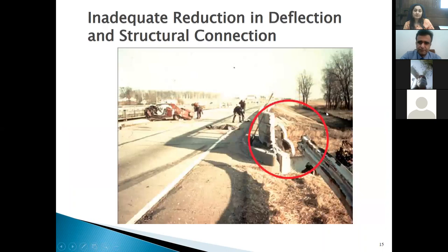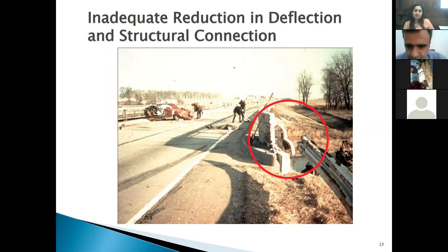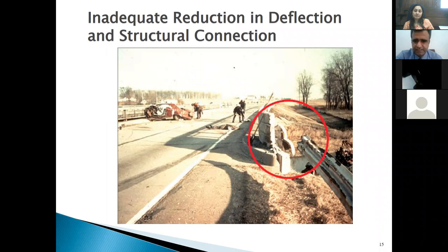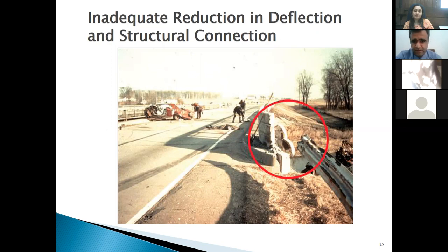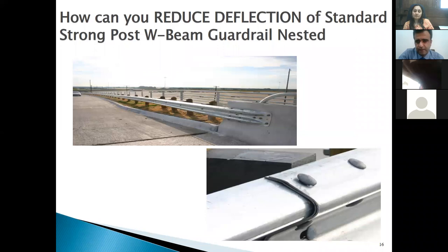When a crash happens without a transition system, what we call 'vehicle pocketing' occurs — the vehicle gets caught in the gap and is then slammed into the bridge structure, causing a severe accident. The number of fatalities in these situations is definitely very high.